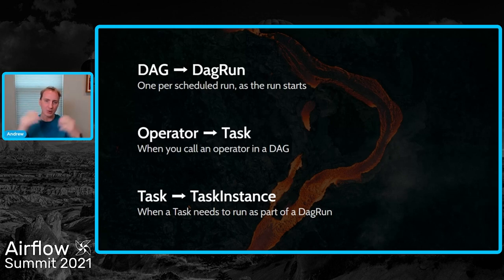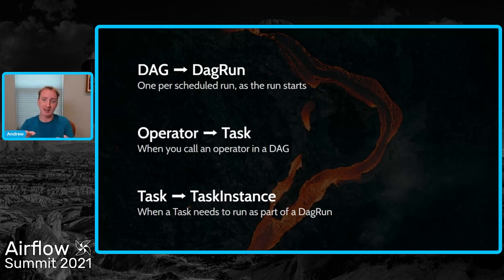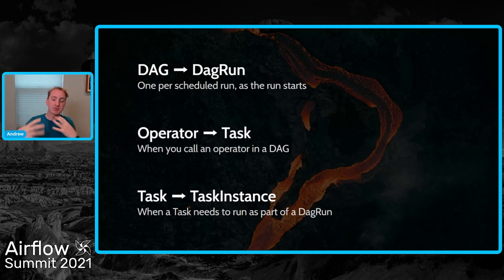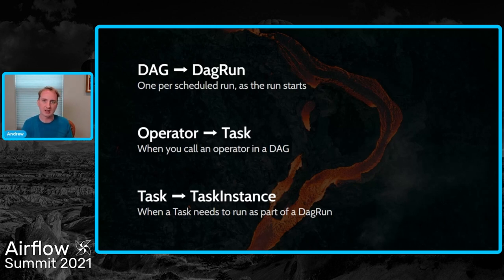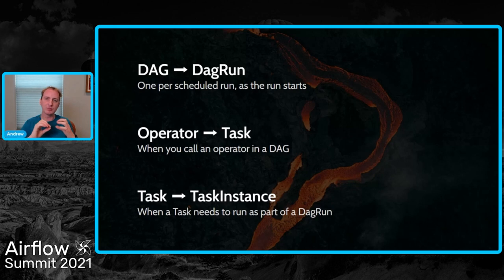I think it's very important to get your head around that. When you write something using the Taskflow API, you skip that operator-to-task step - you're just writing a task directly. I like to think of operators as easy task templates, but of course you can author your own tasks directly as well. The actual way everything works under the hood is impossibly complex, but you can form a decent mental model and get 95% of the way there. I think that's an important part of trying to understand how Airflow works.